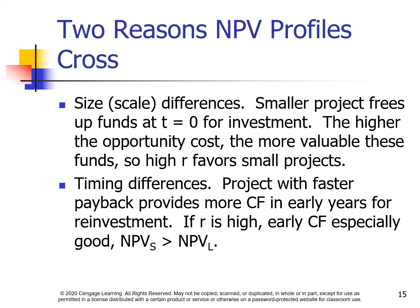Two reasons NPV profiles cross. One, size or scale differences: a small project frees up funds at time zero for investment. The higher the opportunity cost, the more valuable these funds, so a high required rate of return favors small projects. Two, timing differences: projects with faster payback provide more cash flow in early years for reinvestment. If the required rate of return is high, early cash flows are especially valuable.